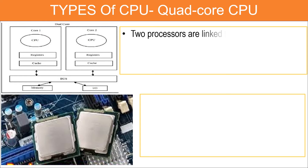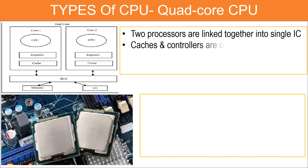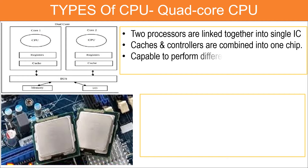In a dual core CPU, two processors are linked together into a single integrated circuit, so their cache and controllers are combined into a single chip. Both processors are linked with each other, and because of this integration, the dual core CPU is capable of performing different difficult operations quickly.